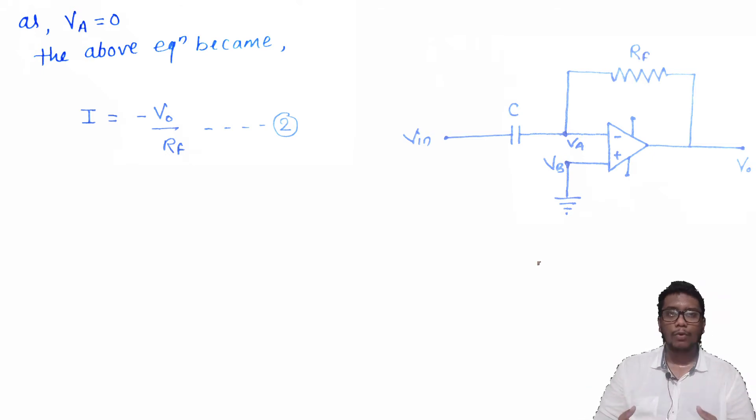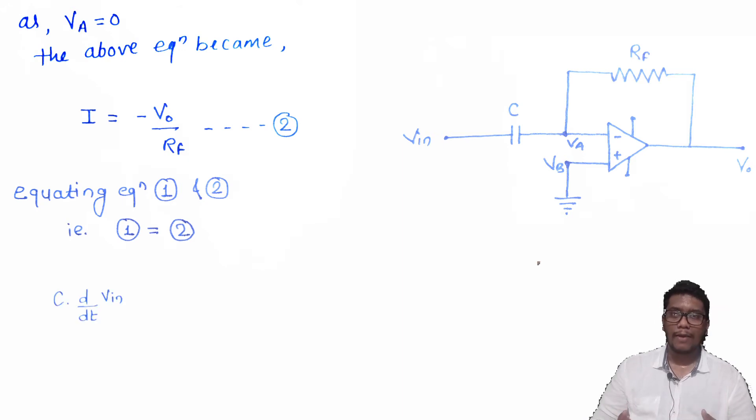Now, we are going to calculate or equate both equations, equation number one and equation number two. And the new expression will become minus V0 upon RF is equals to C into d/dt of VIN.